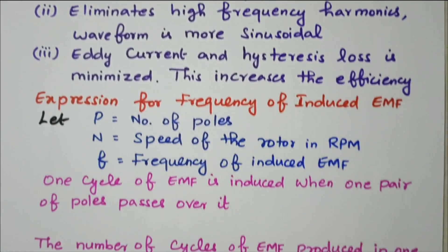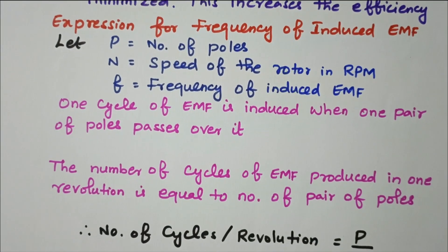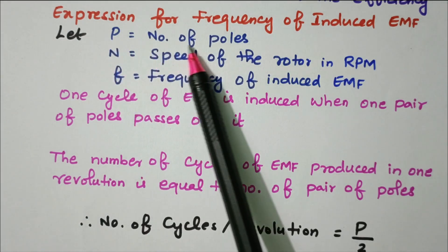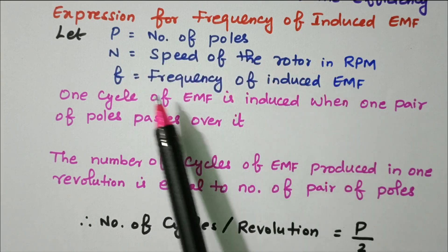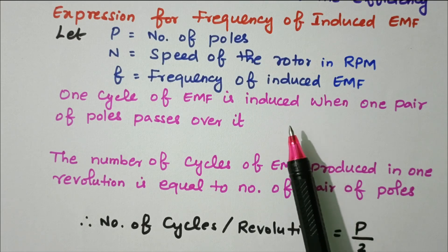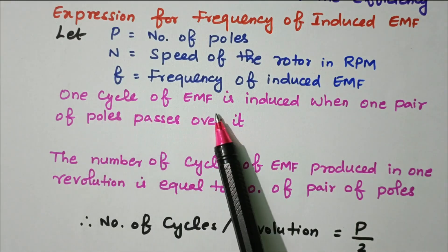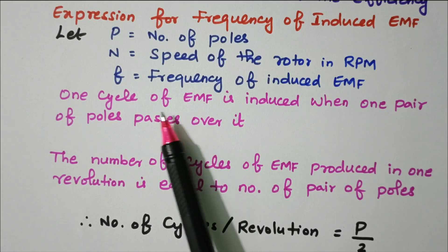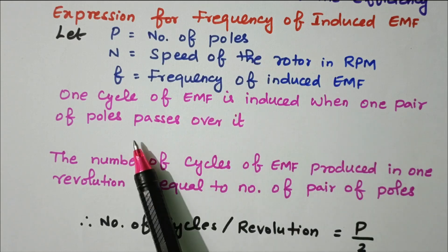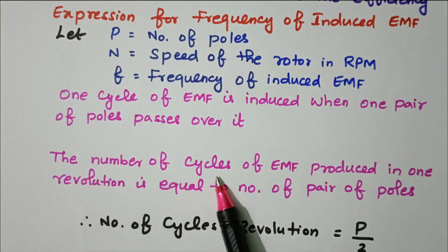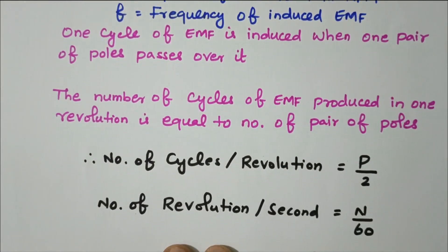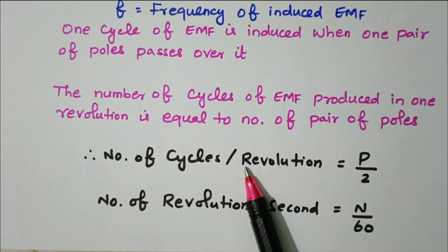Now we'll see the expression for the frequency of the induced EMF. Let P = number of poles, N = speed of rotor in RPM, and f = frequency of induced EMF. One cycle of EMF is induced when one pair of poles passes over a conductor. Therefore, the number of cycles of EMF produced per revolution equals the number of pairs of poles, which is P/2.